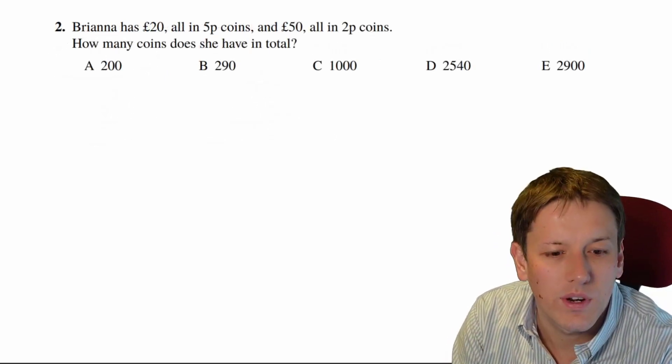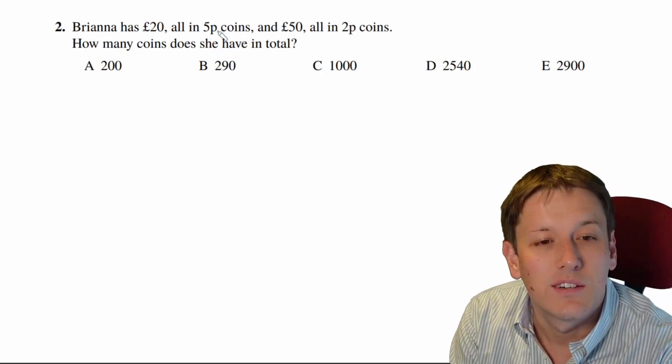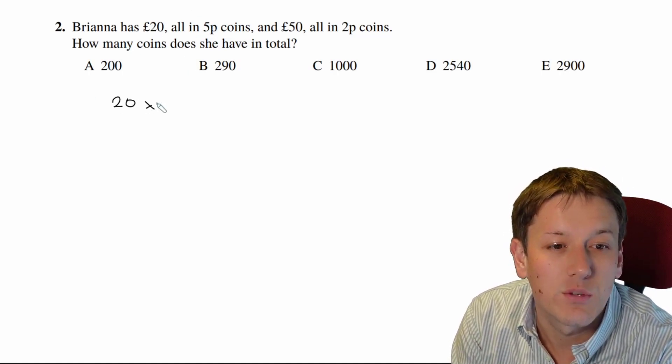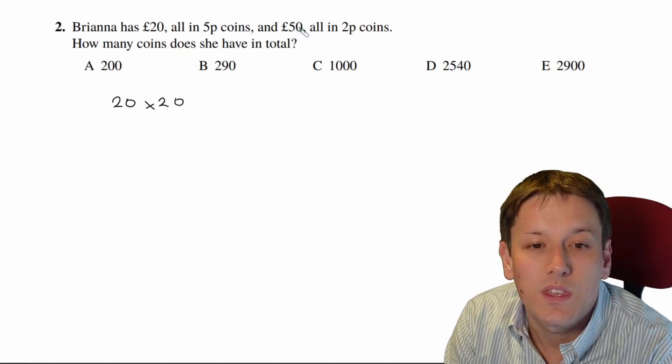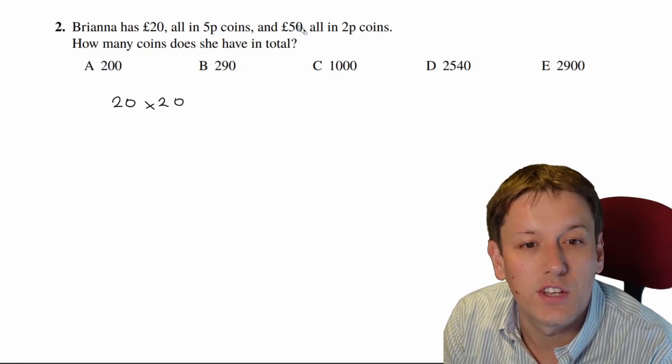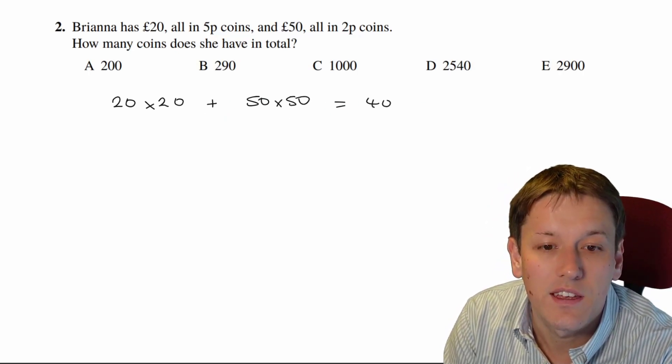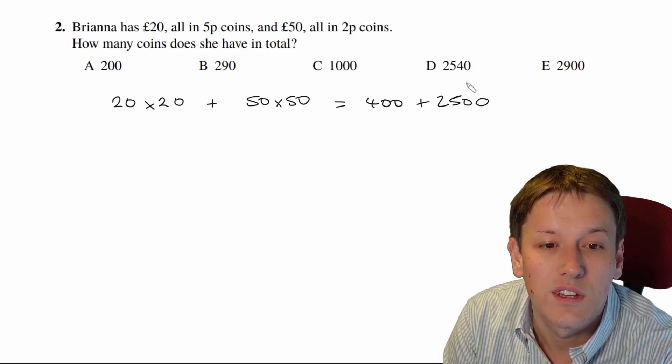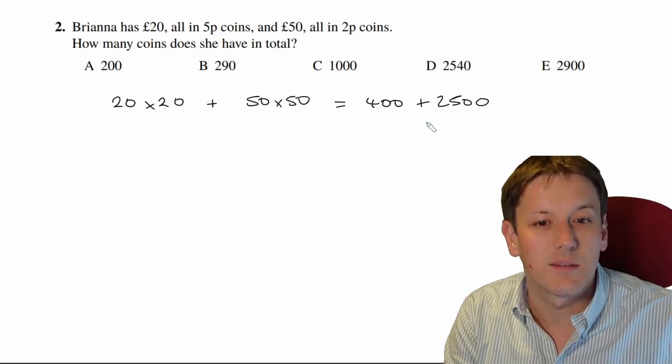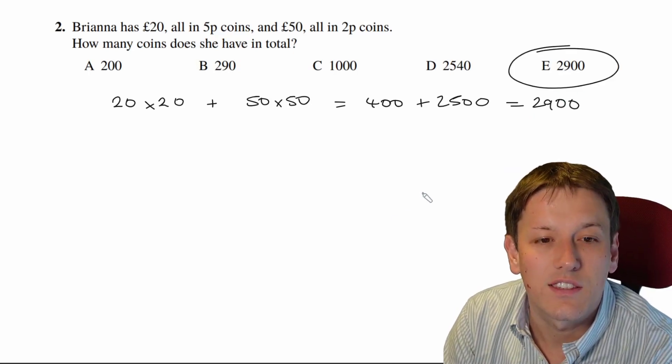So I think when I looked at this question, my instinct was to say, how many 5p coins are there in a pound? Well, 5 times 20 is 100, so there's 20 5p coins in a pound, so in 20 pounds, there would be 20 times 20, and in 50 pounds, there would be 2 2p coins in a pound, because 50 times 2 is 100, so in 50 pounds, there'd be 50 times 50 of them. So we can just add those together and get 400 plus 2,500. These calculations are now easy to do because 2 times 2 is 4, and then times 10 times 10 gives you 100, and the same for 50 times 50 here. So that gives me 2,900, and the answer is E.